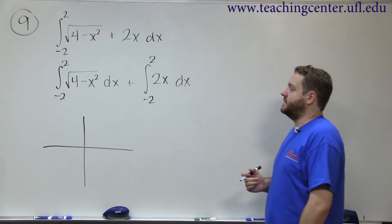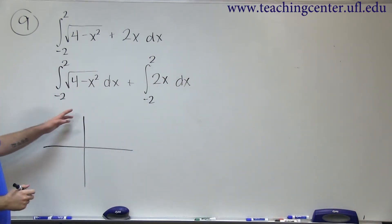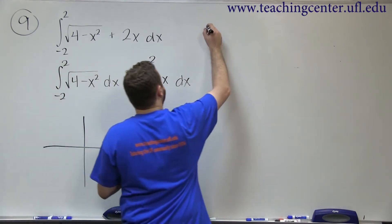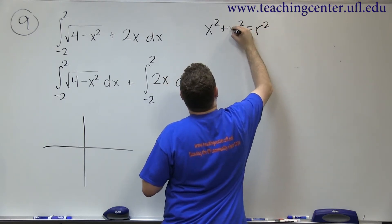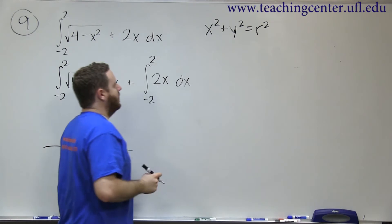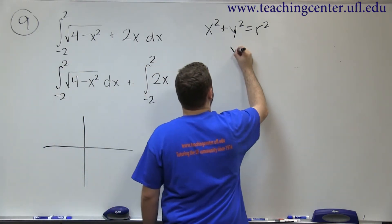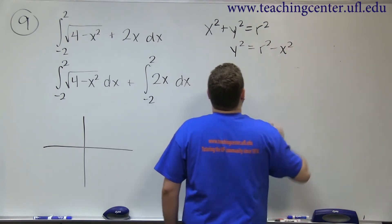Its radius is 2 because this number is 4. So this is the square root of r squared minus x squared. If you think about the circle equation, general form of a circle that's centered at the origin is x squared plus y squared equals r squared. If you subtract over the x squared, you get that function.